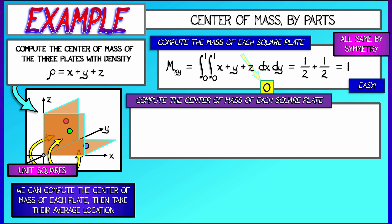Super easy. Now, to compute the center of mass of each square plate, what do I do? I have to divide by the mass, that's equal to one. Then I have to consider x-bar and y-bar in the xy-plane. Those are both going to be equal by symmetry. So let's compute x-bar.